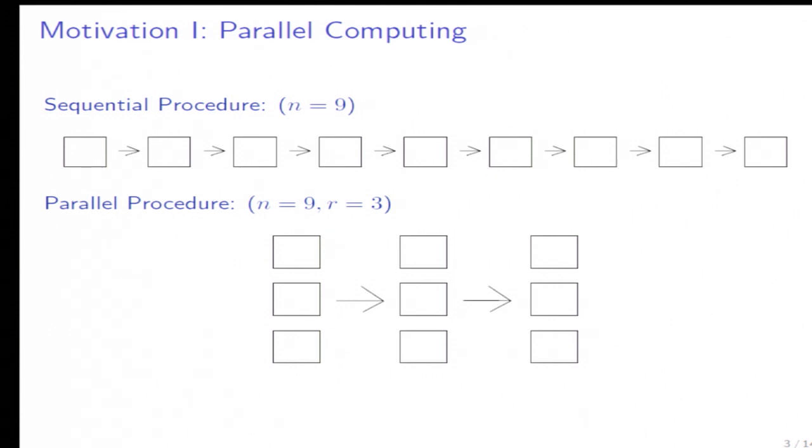However, now we have new techniques. We're in a parallel computing age, so we should use parallel computing to speed up stochastic gradient procedures. As we can see from this graph, in this problem we want to compute nine times the gradient. With three parallel processes, we only need to compute for three times. This can save our computing time.